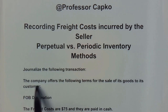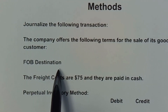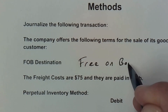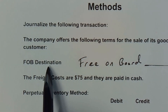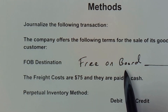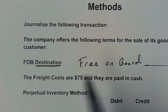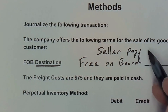In this video, we're going to talk about a company that offers the following terms for the sale of goods to its customer: FOB destination. What that means is free on board with the destination being the buyer's location. Free on board tells us where the ownership and responsibility transfers. So if you've got FOB destination, that means the seller pays shipping costs.